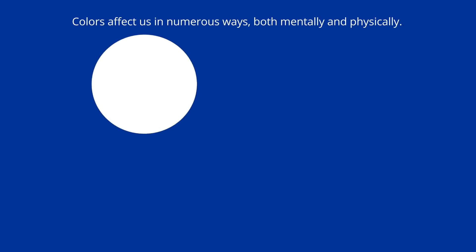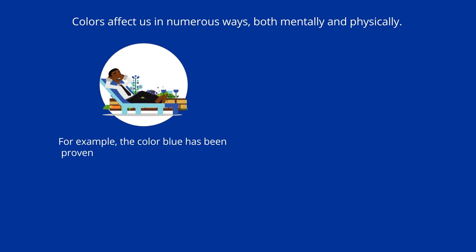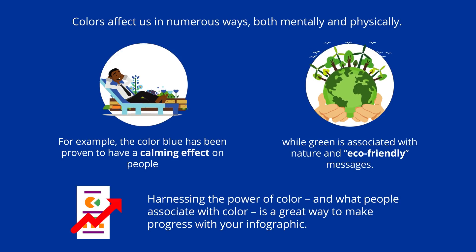Colors affect us in numerous ways both mentally and physically. For example, the color blue has been proven to have a calming effect on people, while green is associated with nature and eco-friendly messages. Harnessing the power of color and what people associate with color is a great way to make progress with your infographic.